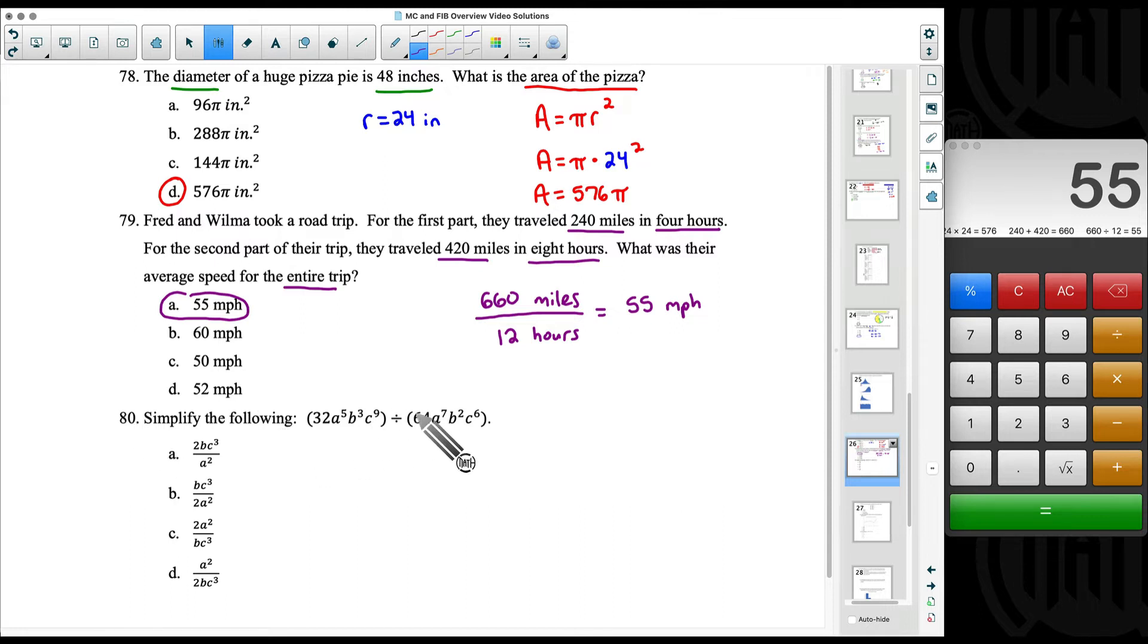Number 80, we're doing some algebra. We're trying to divide here. When you're dividing you can think of this as a fraction, so I'm just going to change the way this looks but it's going to mean the same thing. So this first part, 32a to the fifth b cubed c to the ninth, we can put all of that over - because notice we do have parentheses - all of this stuff over this stuff right here at the bottom.